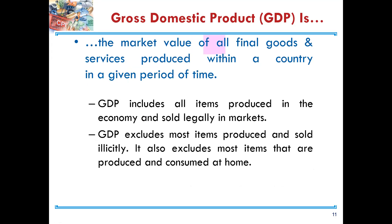The second important concept is 'all'. GDP includes all items produced in the economy and sold legally in markets. GDP therefore excludes most items produced and sold illicitly or illegally. It also excludes most items that are produced and consumed at home.